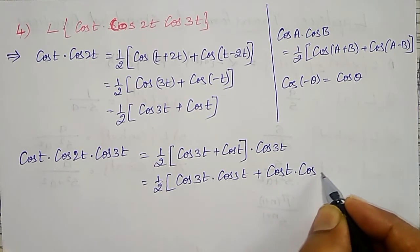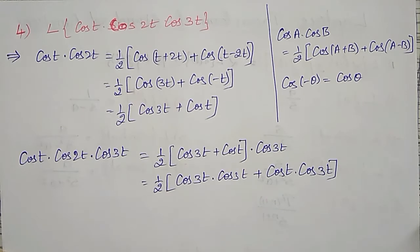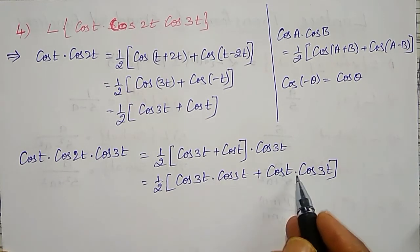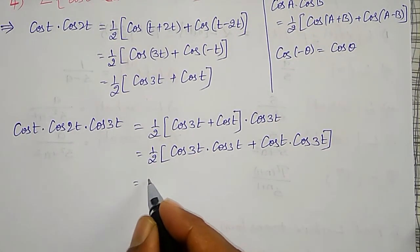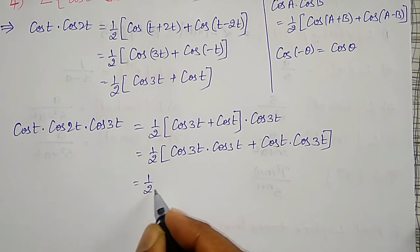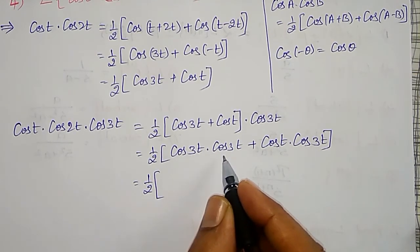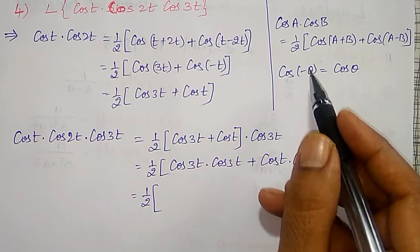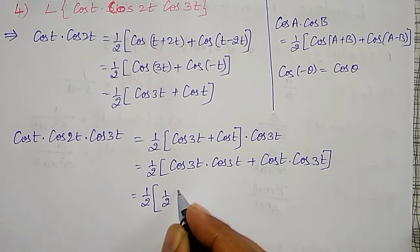Expanding: 1/2 times [cos(3t)·cos(3t) plus cos(t)·cos(3t)]. Applying the product-to-sum formula again to each term: cos(3t)·cos(3t) uses cos(A)·cos(B) = 1/2[cos(A+B) + cos(A-B)].